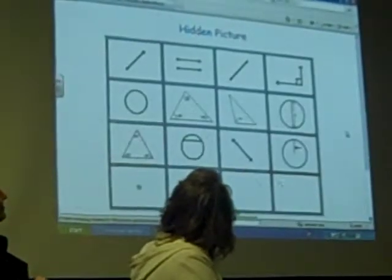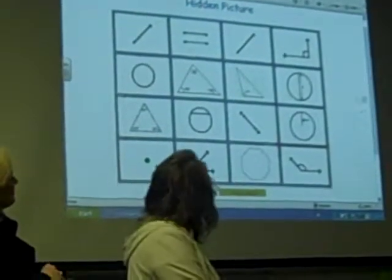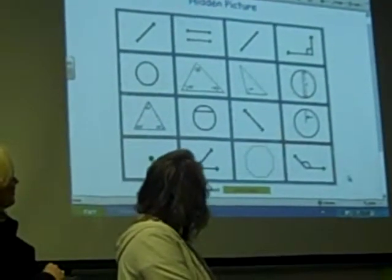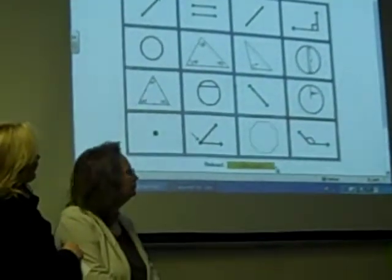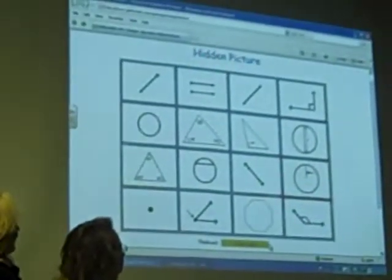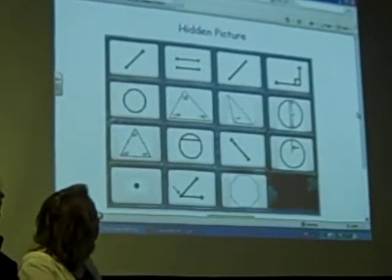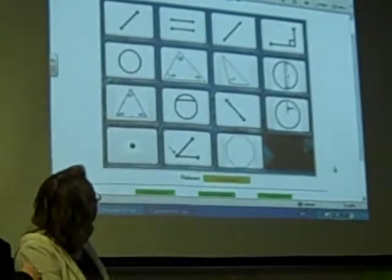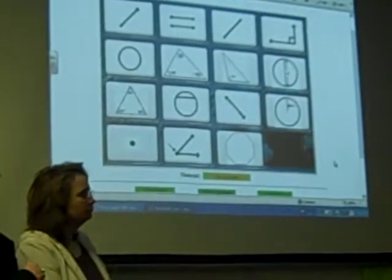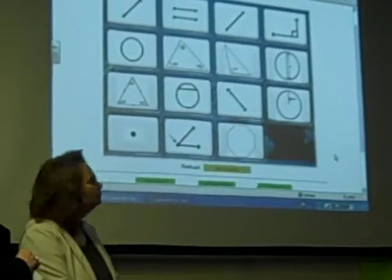There's this flashcard geometry game. Down here they have the vocabulary word — for example, 'obtuse angle' — and you can pull this up. The kids have to find the obtuse angle and click on it. If they're right, it takes away a square. What they need to do is uncover the hidden picture and figure out what it is.